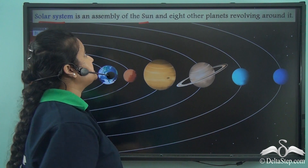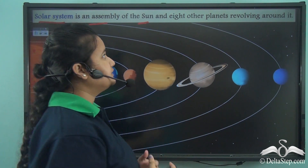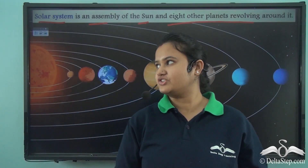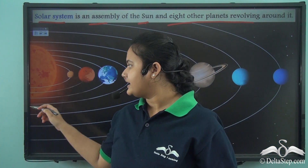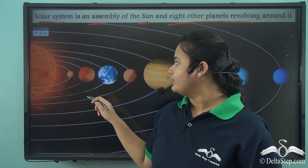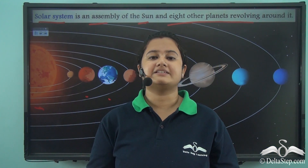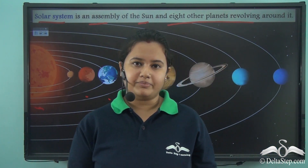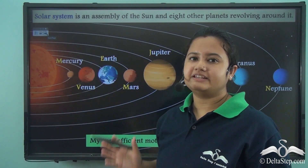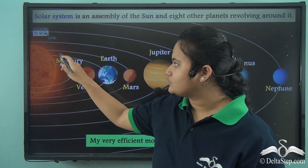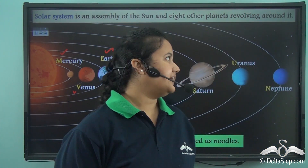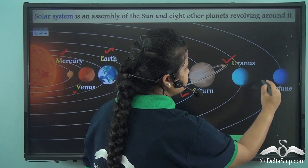The Solar System is an assembly of the Sun and eight other planets revolving around it. Here we have a picture of our Solar System. The Sun is the biggest star, and all eight other planets revolve around this central power — the Sun. The eight planets in order are: Mercury, Venus, Earth, Mars, Jupiter, Saturn, Uranus, and Neptune.